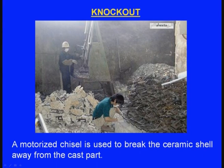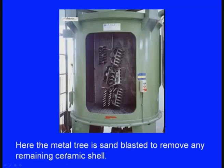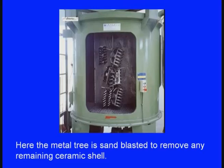The next process is the knockout — breaking the shell and removing the casting. A motorized chisel is used to break the ceramic shell away from the cast part, though sometimes it is broken manually. The metal tree is then sand blasted to remove any remaining ceramic shell. After breaking the ceramic shell, small traces of ceramic shell still adhere to the casting, so a sand blasting system is used to remove these traces.